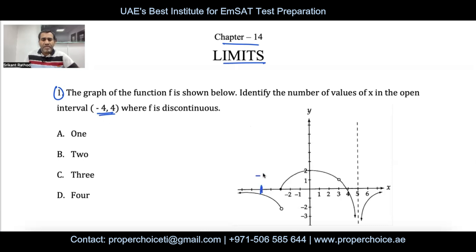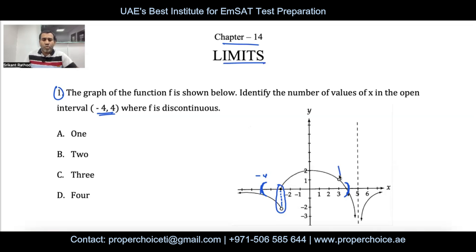Negative 4 is here on the graph — we are looking in the open interval from negative 4 to positive 4. Discontinuity is the point where the function jumps from one point to another. At x = −3, the function has jumped from one point to another — this kind of discontinuity is called jump discontinuity. At x = +3, there is a hole in the function — this kind of discontinuity is called removable discontinuity.